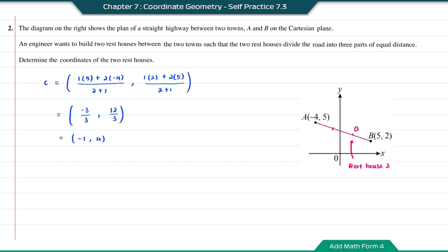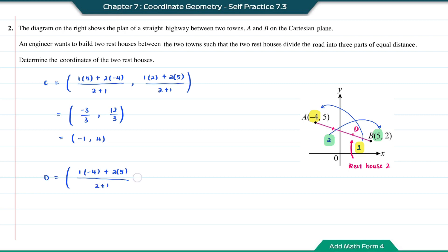To find the coordinate of rest house number 2, which I label D, the ratio from A to D will equal 2 and from D to B this is equal to 1. So this will be: 1 times negative 4 plus 2 times 5 over the total ratio, and 1 times 5 plus 2 times 2 over 2 plus 1. So this will equal 6 over 3 and 9 over 3.